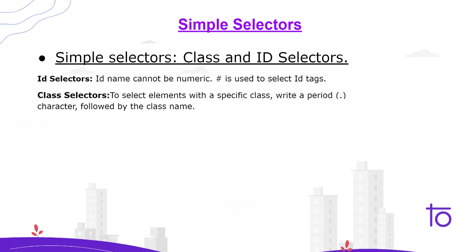Sometimes what happens is we are not able to give an ID name and class name to each and every tag. So for that, CSS has some other selectors as well — combinator selectors, pseudo class selectors, and a variety of others. We are gonna learn all of them one by one.